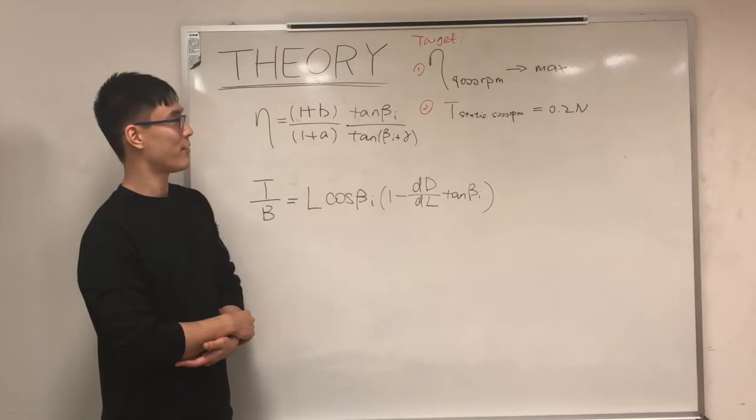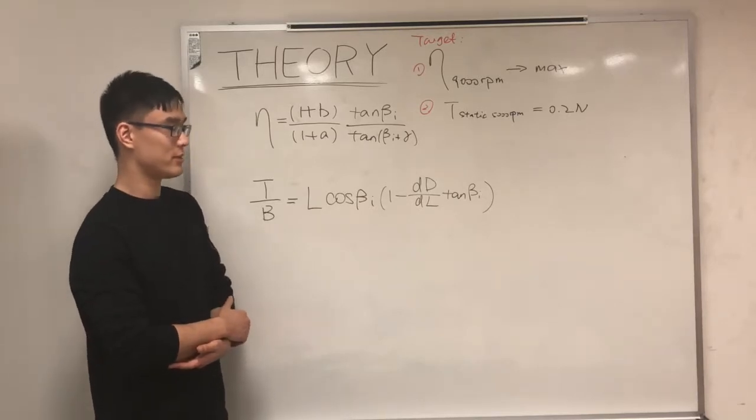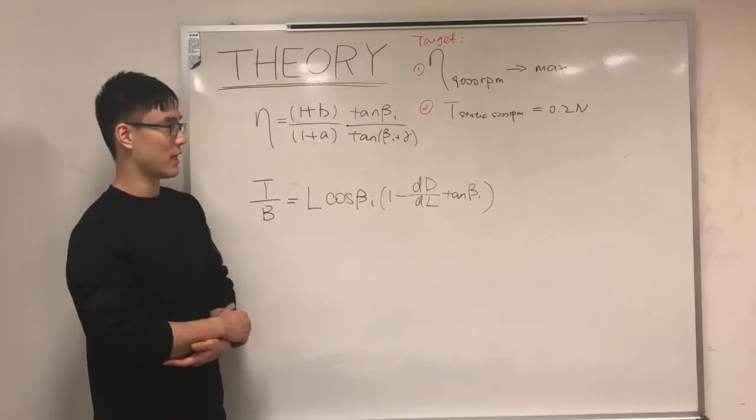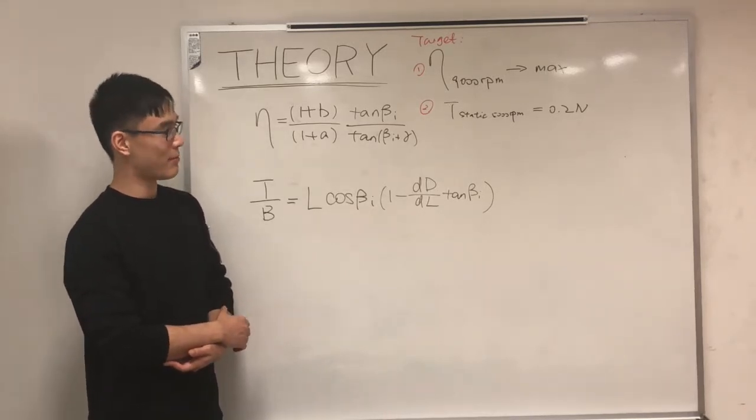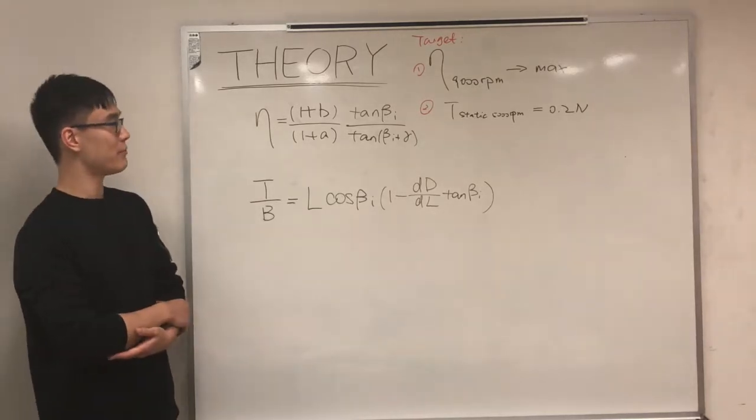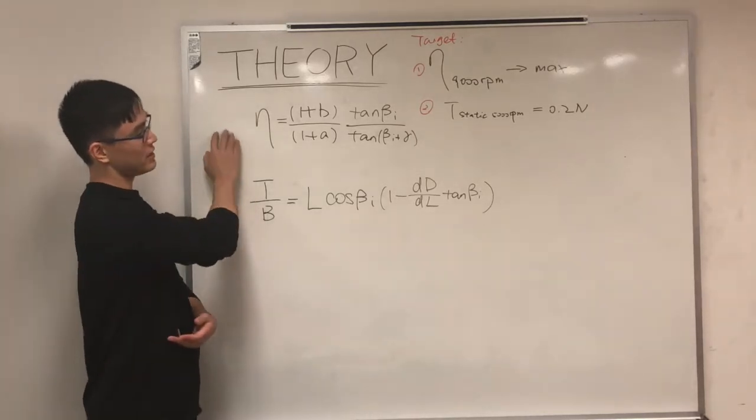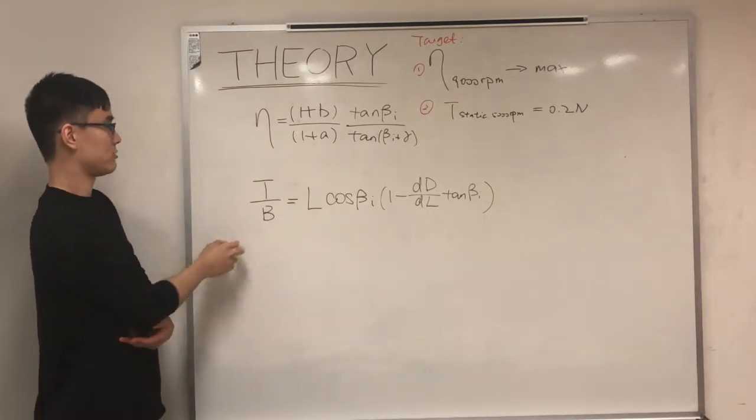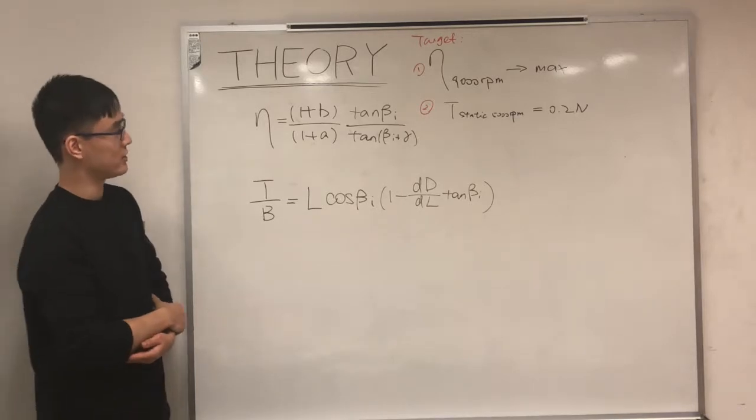Our target is to have a propeller have maximum efficiency rotating at 9,000 RPM and have a static thrust rotating at 5,000 RPM equals to 0.2 Newton. According to the blade element theory, our efficiency is given as this equation and our thrust is given as this equation. B represents the number of the propeller blades, which is 2.